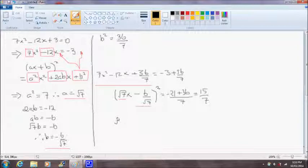So taking square roots of both sides, we'll end up with root 7x minus 6 on root 7 is equal to the square root of 15 divided by 7.